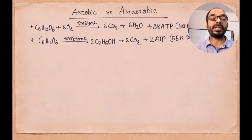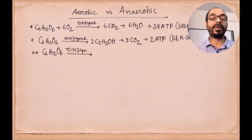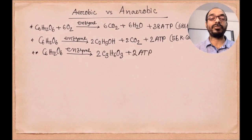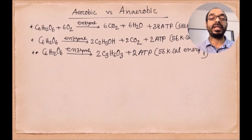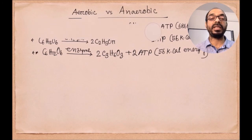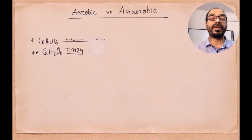Anaerobic respiration generally occurs in plants. In the lower organisms of the animal body, in the presence of enzyme, it produces two molecules of lactic acid, two molecules of ATP, and 56 kilocalories of energy. Comparatively, a huge amount of energy is produced during aerobic respiration, while less energy is produced during anaerobic respiration.